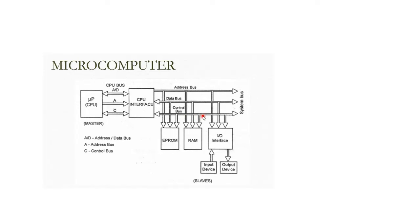If there is a keyboard or a monitor, you must contact the microprocessor through an input/output interface. Memories are also connected through the interface. The bus connects to memory, then to the interface, then to the microprocessor. The address bus, data bus, and control bus together are called the system bus.